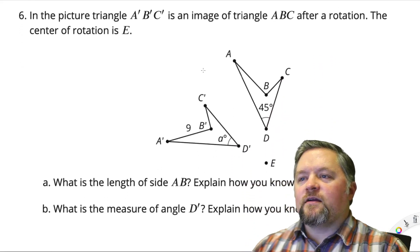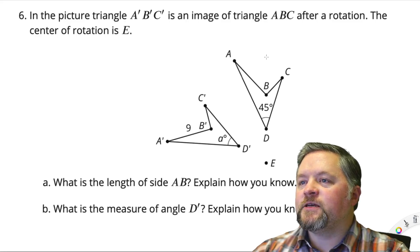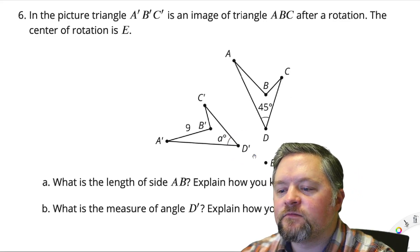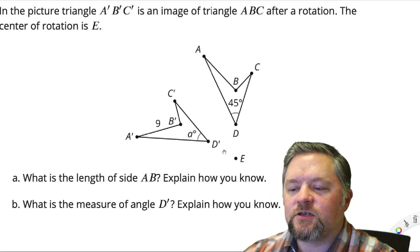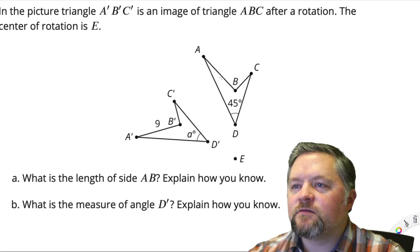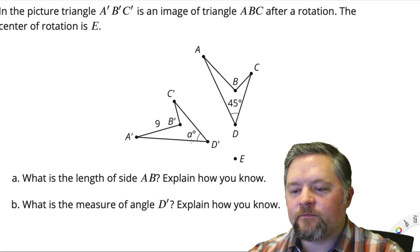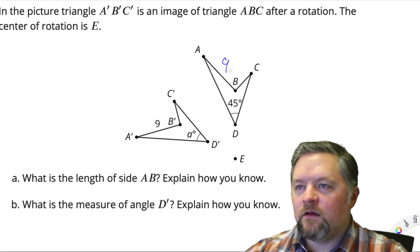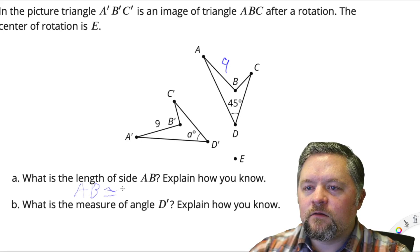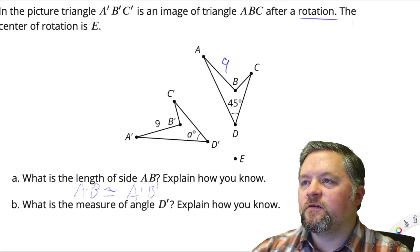Now, triangles. In the picture, triangle A prime, B prime, C prime, this guy here, is an image of triangle ABC, this guy here, after a rotation. Center of rotation is E. Okay, I'm with you so far. What is the side length of AB? AB is this, which corresponds to A prime, B prime. And we know A prime, B prime is 9. So what's the length of AB? Also 9. Why? Because AB is congruent to A prime, B prime, because a rotation is a rigid transformation.